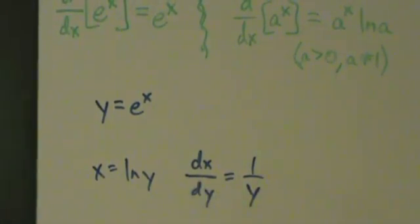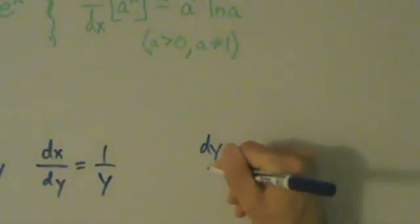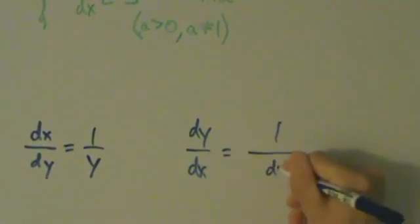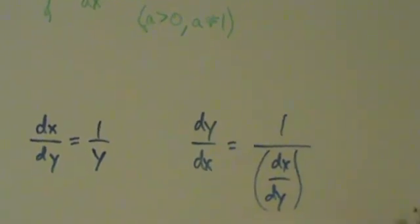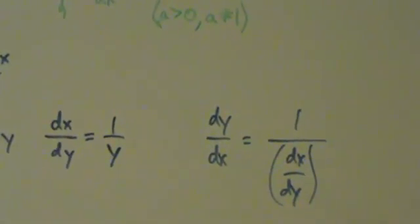So now we're going to use the inverse function theorem, and just off to the side real quick, remember what that said from the last video. It says dy dx equals 1 over dx dy. So we're going to use this fact to find dy dx.